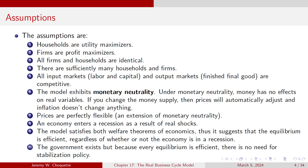There's no role for government to use any sort of stabilization policy in terms of the business cycle. Assumptions: households maximize utility — they do the best they can with what they've got. Firms maximize profit. All firms and households are identical. There are sufficiently many of them such that one household or one firm can't affect the market equilibrium. All input markets — labor and capital — and the output market are perfectly competitive.